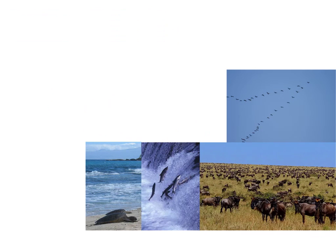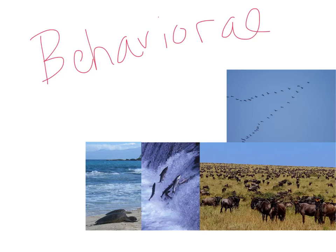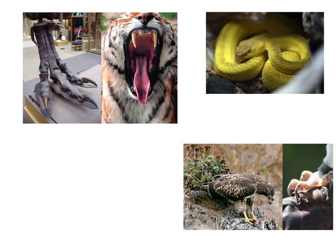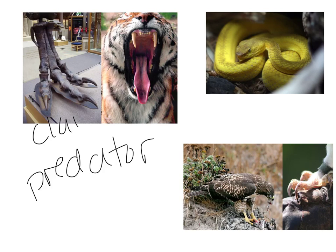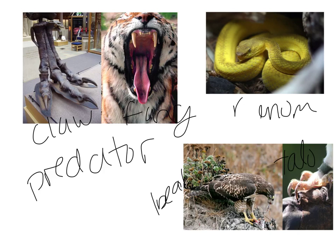In addition to defensive mechanisms, there are behavioral adaptations that can help organisms survive — things like herds, pack mentality, and migration, where organisms move based on resources or reproduction. Predators may also have specific adaptations that help them hunt: things like claws and fangs, venom, and predatory birds have a sharper beak and sharp talons to help them catch and hold on to prey better.